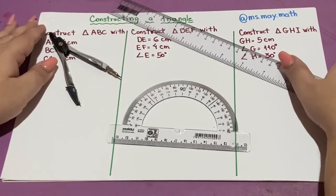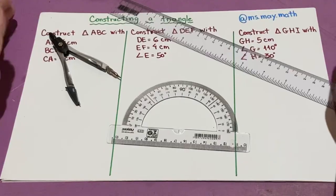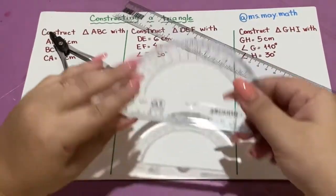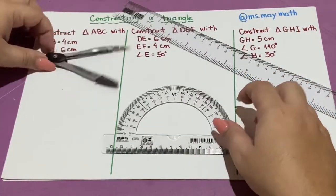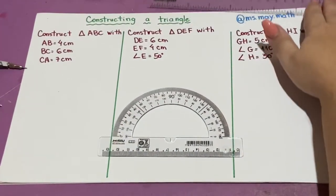Hello math friends! Today we are going to show you how to construct a triangle using a ruler, a protractor, and a compass. We have three situations.